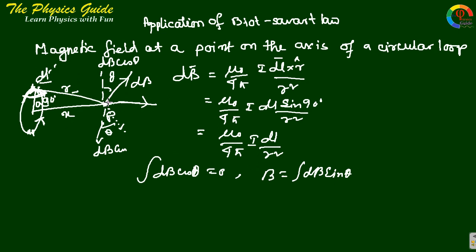The resultant magnetic field is the integration of dB sin theta along the axis direction. The cos theta terms cancel, but the dB sin theta term — noting that the angle from the axis gives sin theta — provides the net magnetic field component along the axis.